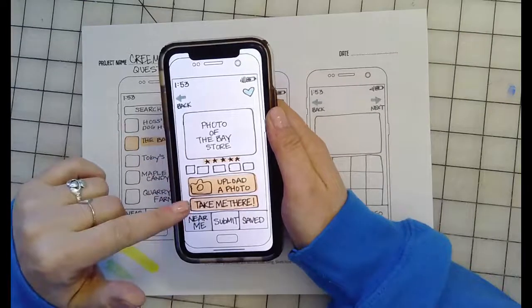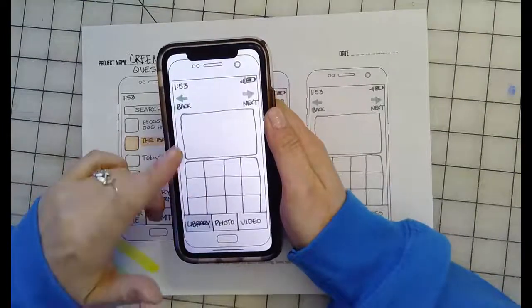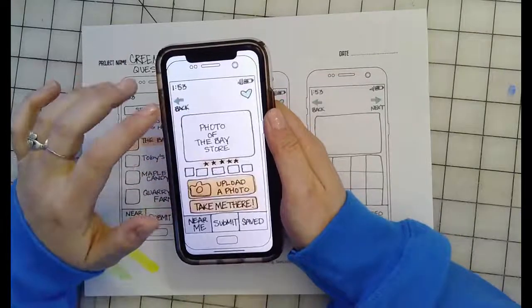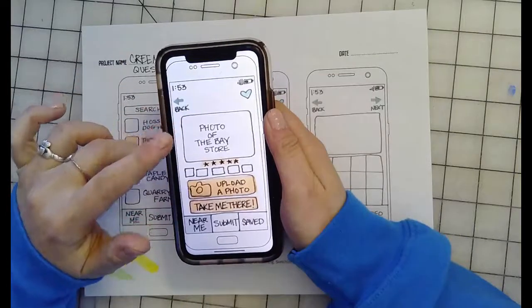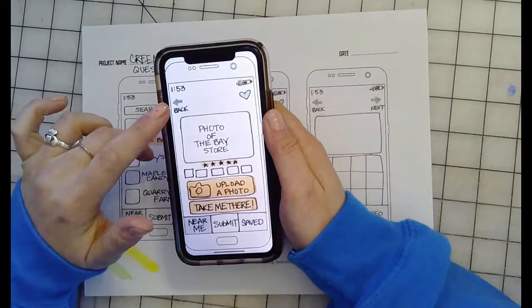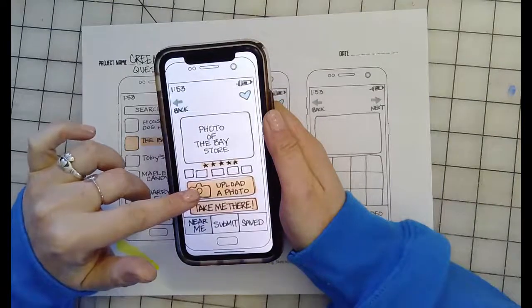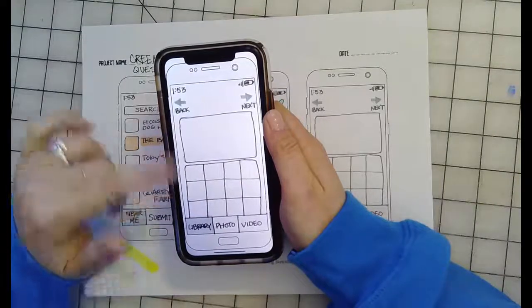So the blue buttons on my app are the actionable buttons, the orange buttons on my app are the navigation buttons. So make sure you make note of those before you share it with me, so that way I know what to tap on and I'm not just going all over the place.